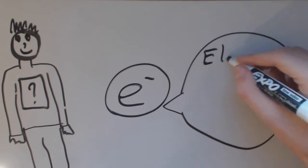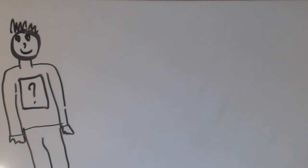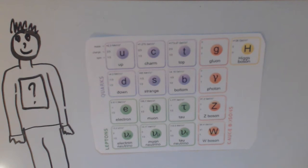As for the electron, there is no particle that makes it up. It is an elementary particle. Physicists have actually made a table that groups up all of the elementary particles. We call it the standard model of particle physics.